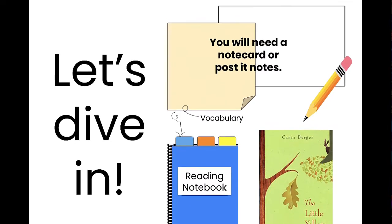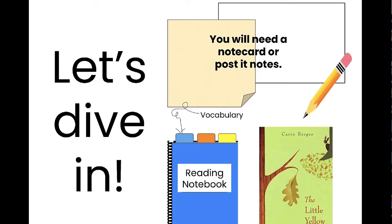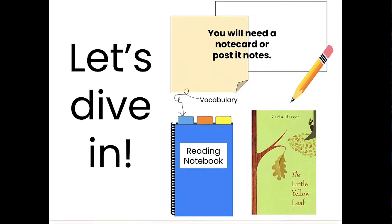Hello, second graders. Today we are doing the deep dive number 12 for module 1. You will need either post-it notes, a note card, or just a piece of paper to write on. You will also need your reading notebook — we're going to use the vocabulary section again. And you need your book, The Little Yellow Leaf.